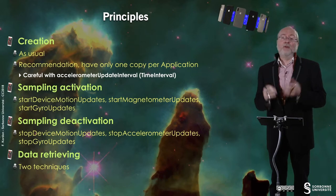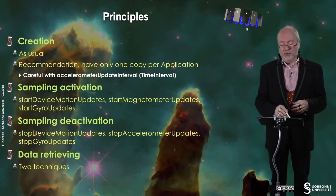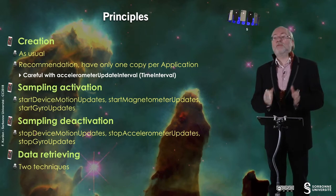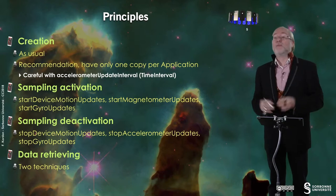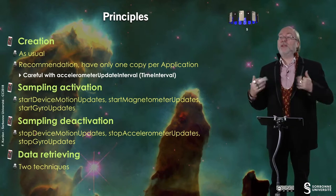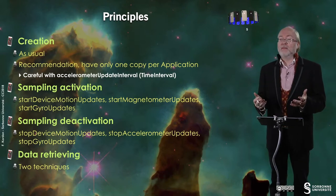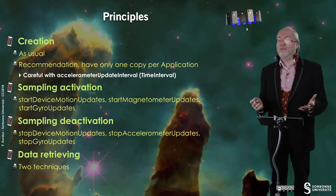You can then activate sampling using these three methods: startDeviceMotionUpdate, startMagnetometerUpdate, and startGyroUpdate. You start sampling for the appropriate subset of data handled by CMMotionManager. And of course you can deactivate it using the corresponding stop methods. In between, you can retrieve data, and there are in fact two ways to do so.